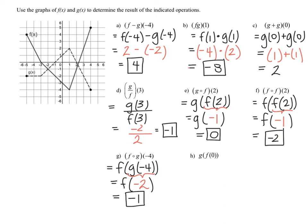Last one: g of f of zero. Looking at the inside, f of zero — when x equals zero on function f, the output is negative three. So f of zero equals negative three. That becomes our input into function g. When x equals negative three on function g, the y value is negative two. So the final answer is negative two. That shows you how to use a graph to perform several operations as well as compositions with functions.